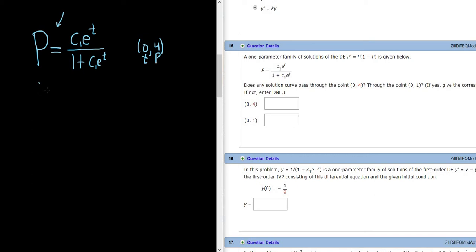So P is 4, so we have 4 equals C1*e^0 over (1 plus C1*e^0). So that means we have 4 equals—e^0 is 1—so we just get C1 over (1 plus C1). And we have to try to solve for C1.